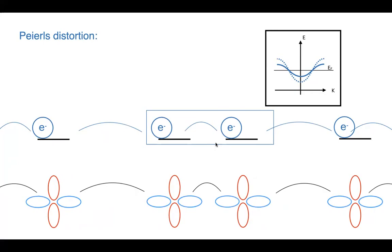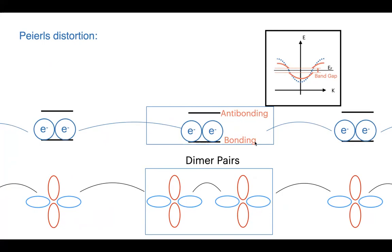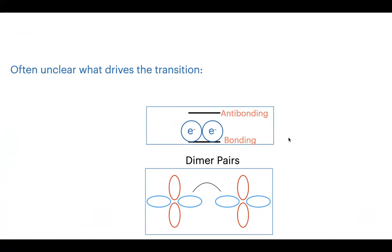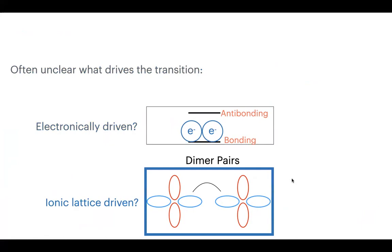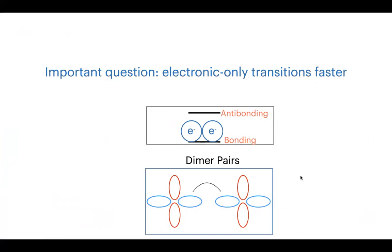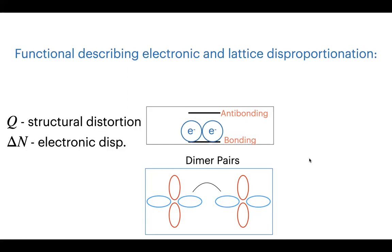A well-known example is the Peierls distortion: a dimerization of pairs of atoms leads to a band gap opening. This dimerization is associated with bonding and anti-bonding orbitals, so the local orbitals may no longer be the best basis. This also appears in vanadium dioxide, where it's often unclear whether the transition is electronically or ionically driven — electronic-only transitions tend to be faster. These can be quantified with electronic and lattice order parameters.